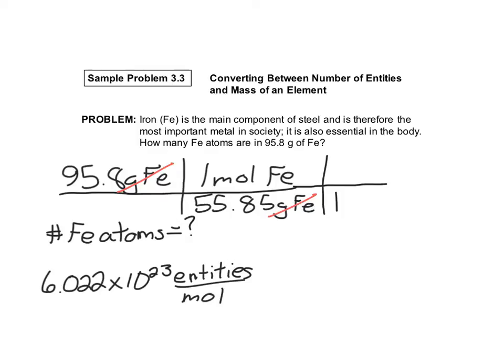So in one mole of iron, Avogadro's number tells me there's 6.022 times 10 to the 23 iron atoms.